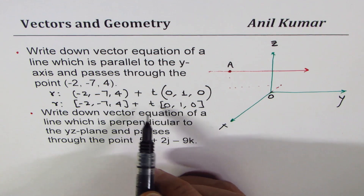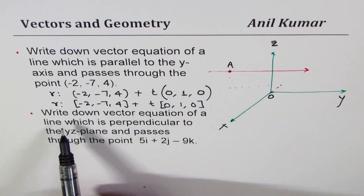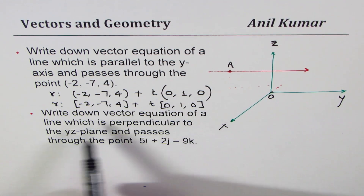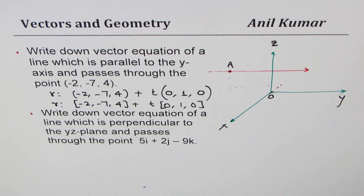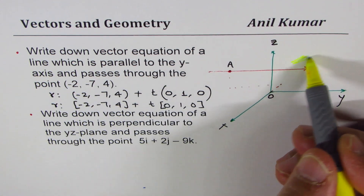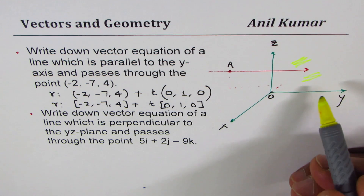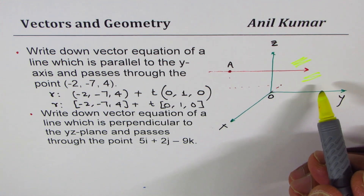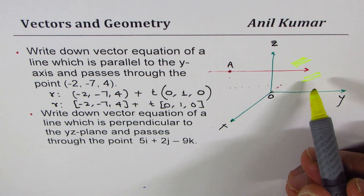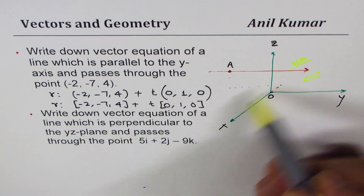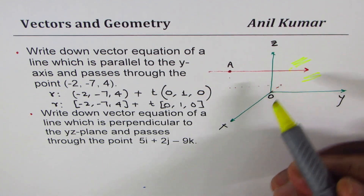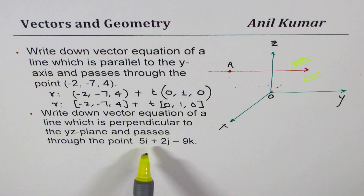Now let's do the next one: write down the vector equation of a line which is perpendicular to the YZ plane. The YZ plane is right there — think about the wall in front of you, that is the YZ plane. If I have to write the equation of a line perpendicular to it, that means the line is either coming out of it or going inside.